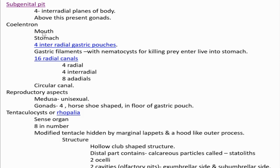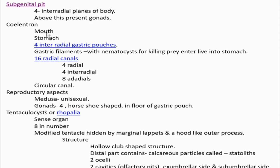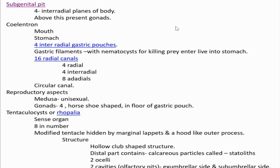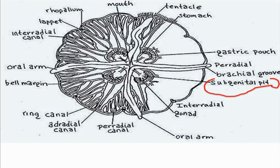Regarding the coelenteron, the gastrovascular cavity: the four-cornered mouth opens into a space inside the manubrium called the stomach. From the stomach, four interradial gastric pouches extend in four directions. Each gastric pouch is expanded, and inside it a horseshoe-shaped gonad is located, so there are four gonads in total — one in each gastric pouch. Gastric filaments are also present inside the gastric pouches.